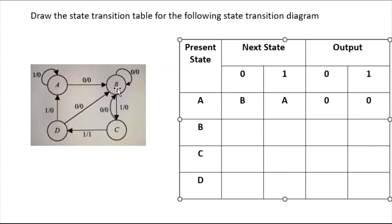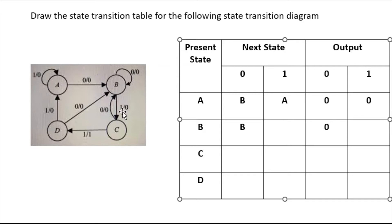When A has zero as input it is going to B, and the output is again zero. Now come to the B state. When input is zero, B is going to A — no transition, no change — and output is A. When input is one it is going to state C.